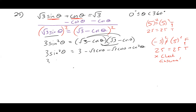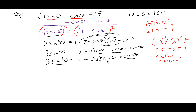Now the question is which trig function are we going to get rid of in order to get this to the same trig function? I have a sine squared, I have a cosine linear term, and then I have a cosine squared. Notice we have a linear form right here — that's just cosine in a linear form. So I'm going to change everything into cosines. By the Pythagorean theorem, sine squared is the same thing as one minus cosine squared theta. Now notice we have everything in terms of just one single trig function.